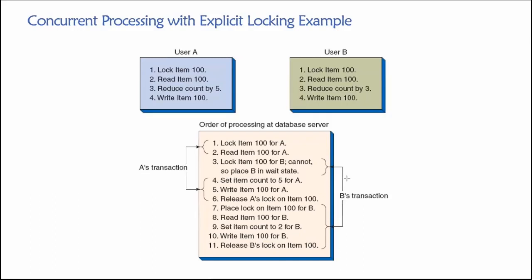The result of having this locking strategy in place is that, after completing all steps in the transactions for user A and user B, we have 2 units of item 100 in inventory — and that is consistent with what we would expect. We started with 10. User A sold 5. User B sold 3. Together, 8 units were sold. 10 minus 8 is 2.